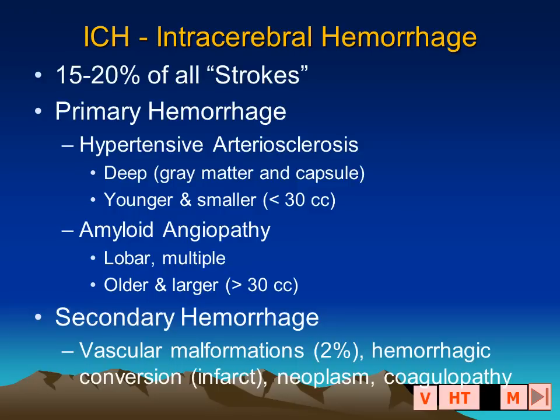Primary hemorrhage may occur in the context of hypertension or amyloid angiopathy, and secondary hemorrhage may occur as a result of pre-existing lesions, including vascular malformations, neoplasm, or in the context of a coagulopathy or hemorrhagic conversion in a stroke.